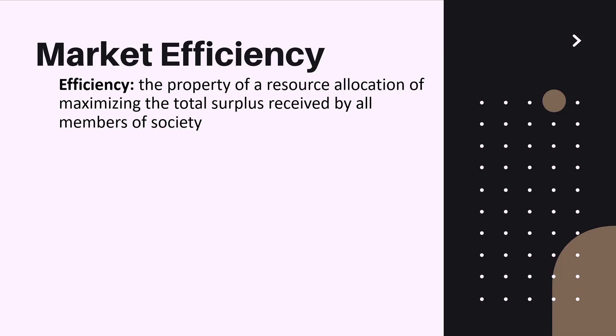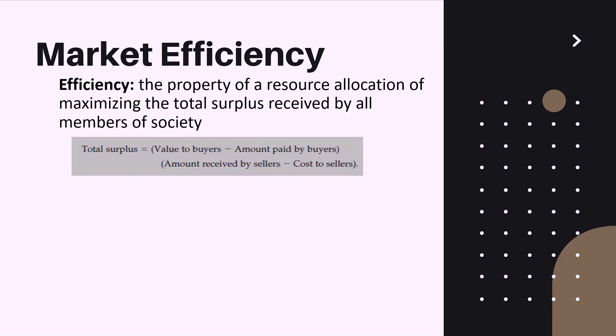Now let us understand total surplus. We have discussed consumer surplus and producer surplus, but not total surplus. The formula is: total surplus equals consumer surplus — which is value to buyers minus amount paid by buyers — plus producer surplus — which is amount received by sellers minus cost to sellers.